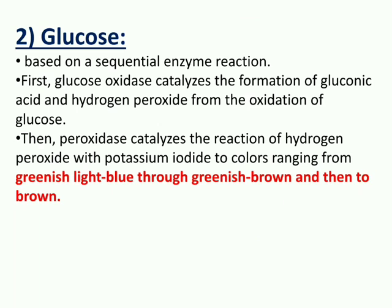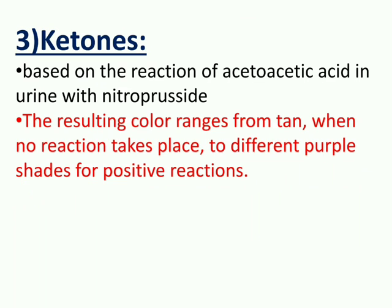Next is the test for glucose, which is based upon sequential enzyme reactions. First, glucose oxidase catalyzes the formation of gluconic acid and hydrogen peroxide from the oxidation of glucose. Then peroxidase catalyzes the reaction of hydrogen peroxide with potassium iodide, producing a color ranging from greenish light blue to greenish brown and lastly to brown.